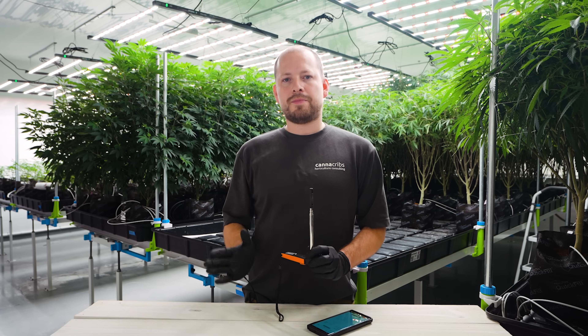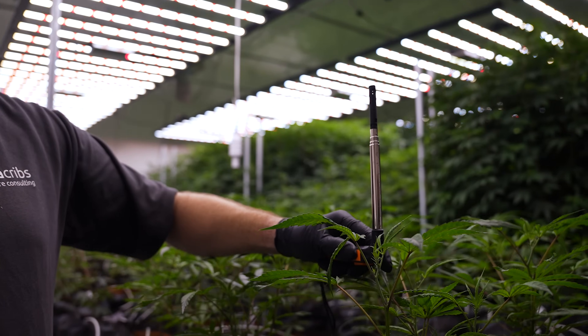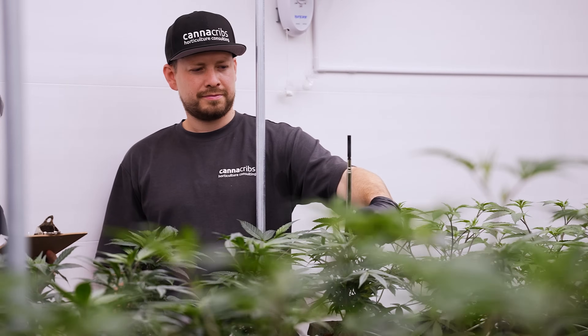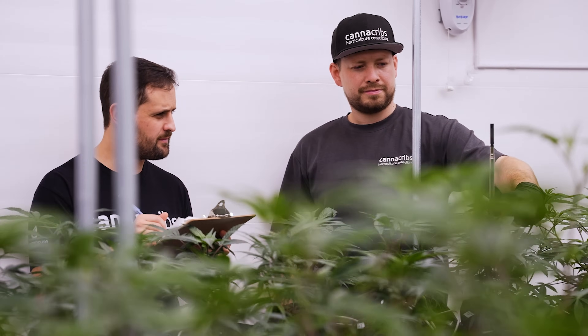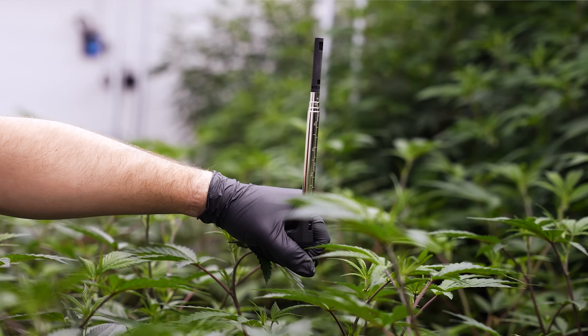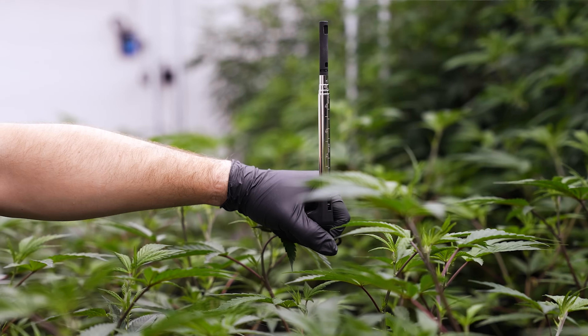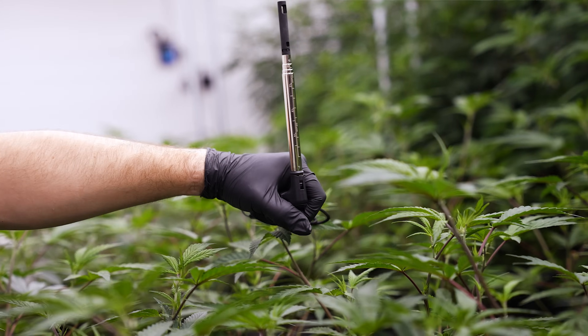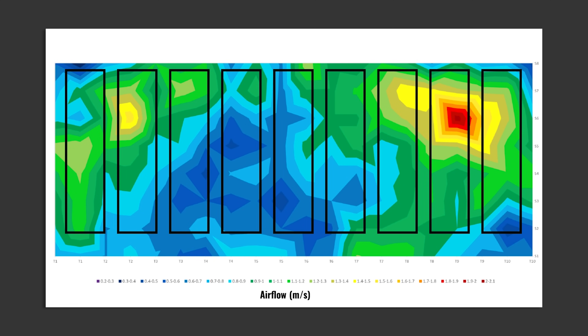We like to measure the airflow at canopy level using a systematic approach. We measure the airflow on each individual table at different points throughout the table. With this data, we can then create a map showing areas of high airflow or low airflow.